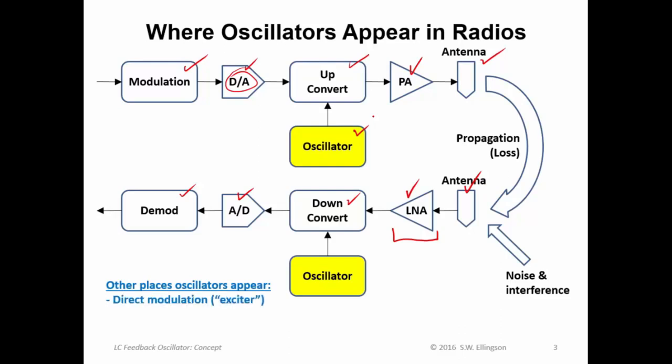For example they appear in direct modulation. I may have discussed in a previous lecture the fact that in some transmitters we simply use an oscillator as the source of the signal. So we might have an oscillator and then a PA and then the antenna. And the oscillator is variable to introduce the modulation. If we're doing AM we might vary the oscillators magnitude. If we're doing FM we might vary its frequency and so on.